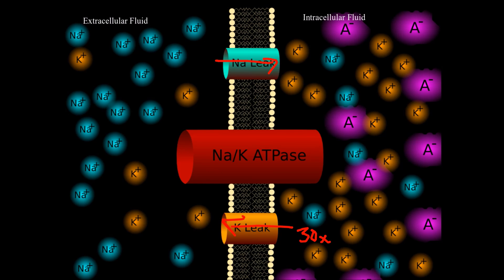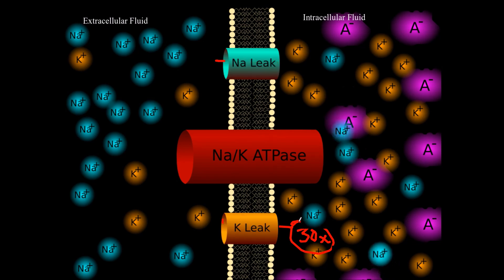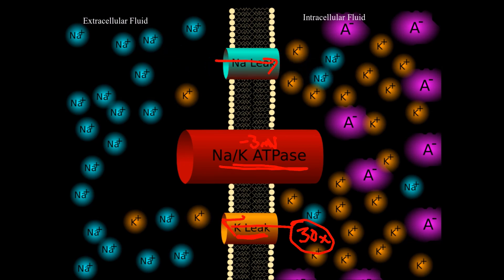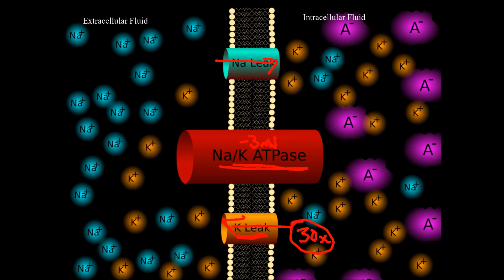The sodium-potassium ATPase gives about negative 3 millivolts of excess charge on the inside. But it's mostly the potassium leak channels — where potassium leaks out of the intracellular fluid into the extracellular fluid at a much higher rate than sodium leaks in — taking positive charges out that primarily drives the negative 70 millivolts on the inside of the cell.